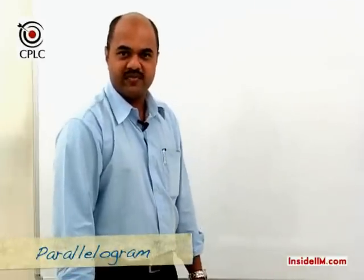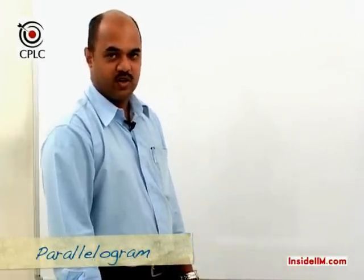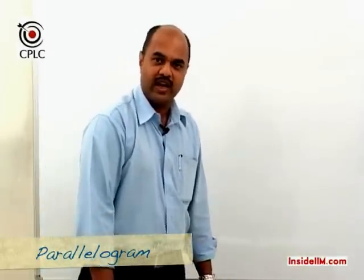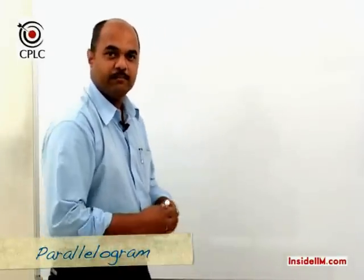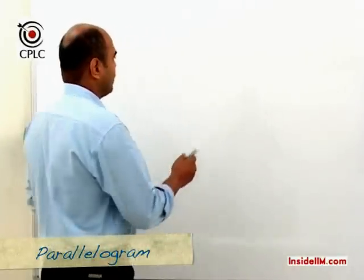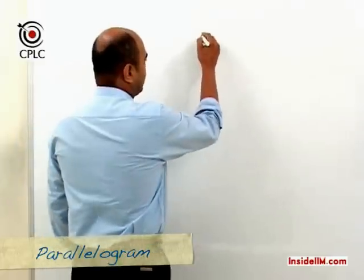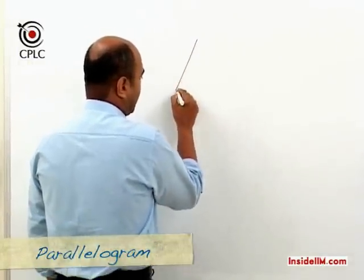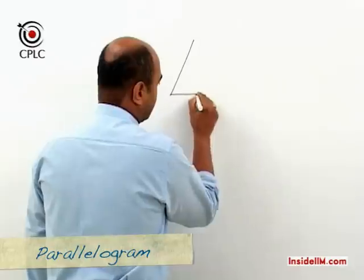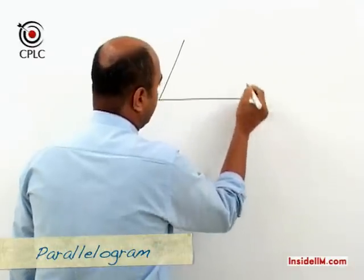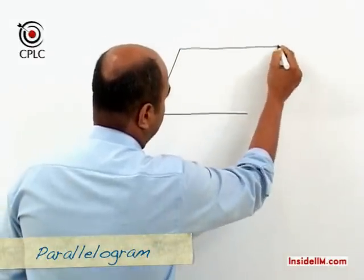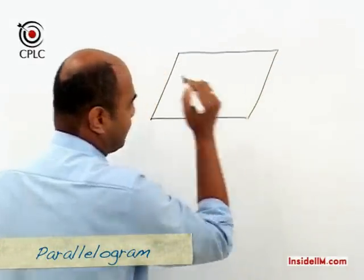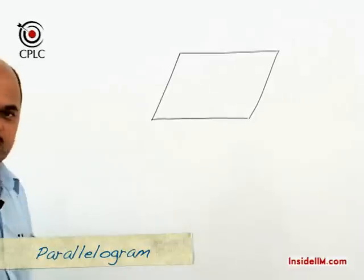Let's now move on to some specific types of quadrilaterals. The first one we are going to look at is a parallelogram. Let's first draw the diagram for a parallelogram and then understand what the properties of a parallelogram are.